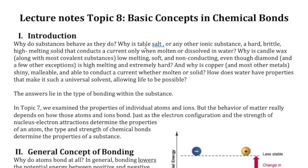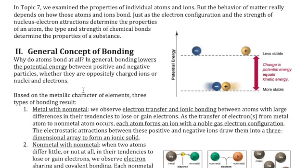For example, why is table salt very brittle and hard, easy to break, whereas things like candle wax are low melting, soft, and non-conducting? That's what chemical bonds help to answer.